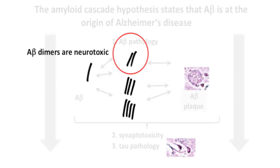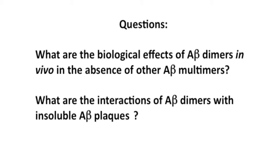The A-beta dimers are neurotoxic and can explain some of the early symptoms that Alzheimer's disease patients manifest. We wanted to investigate whether A-beta dimers could account for early effects of cognitive impairment in Alzheimer's disease and create an in vivo mouse model for elucidating early Alzheimer's disease. A second question was to investigate the relation between soluble neurotoxic A-beta dimers and insoluble A-beta plaques.